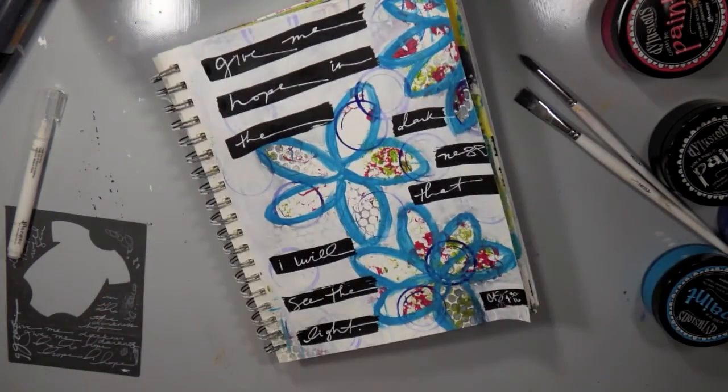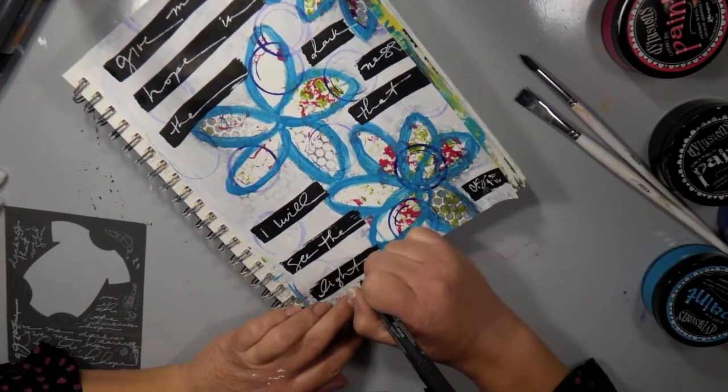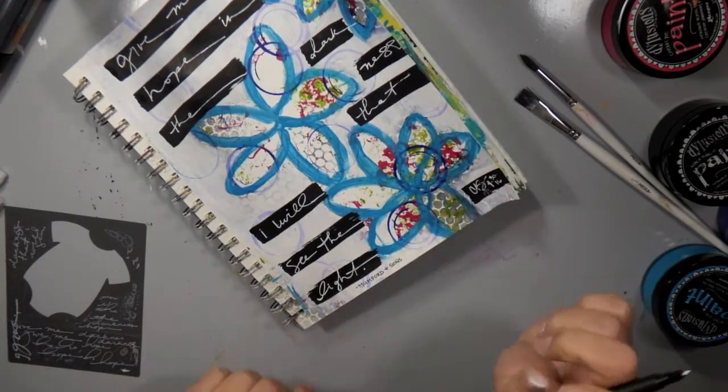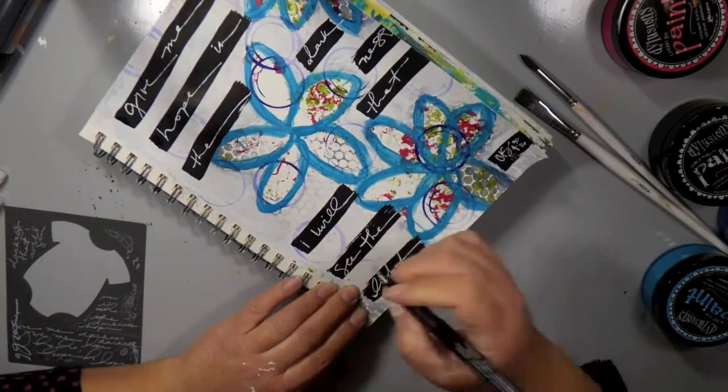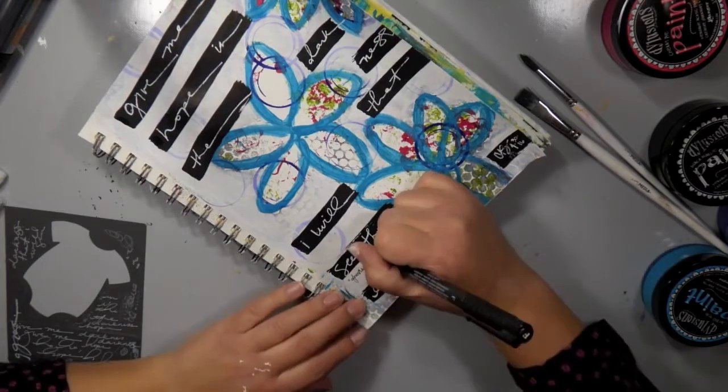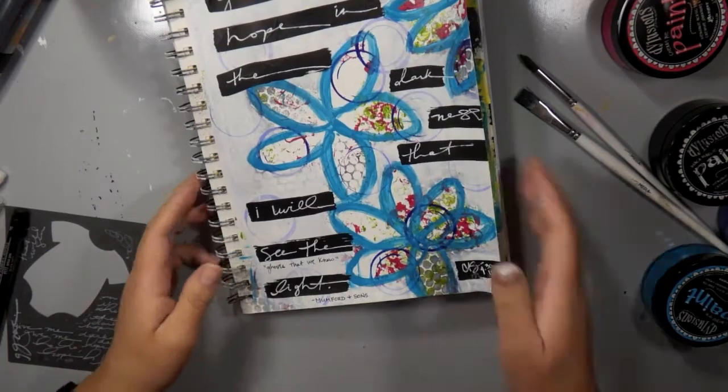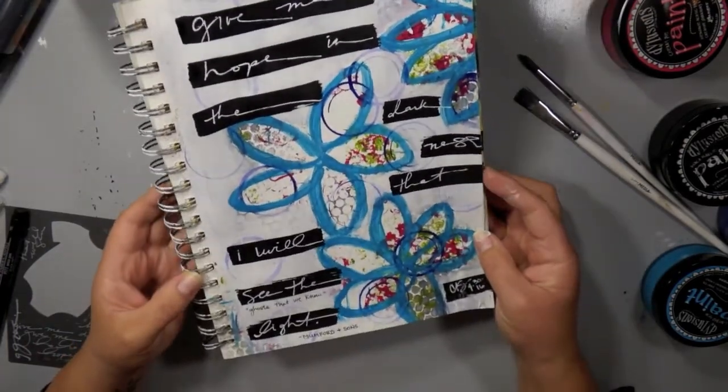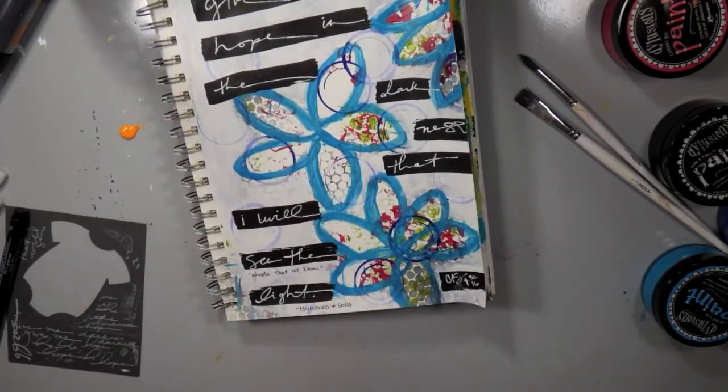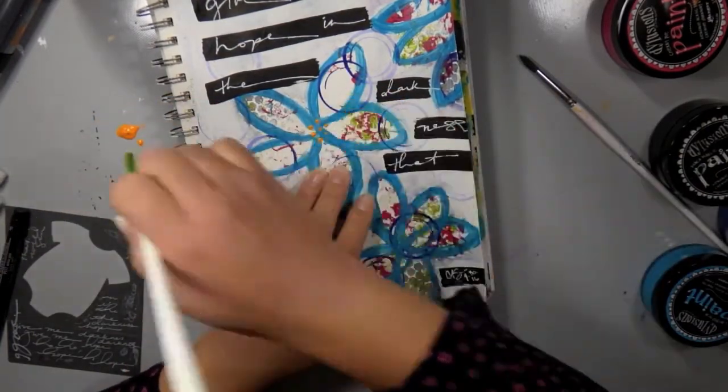Oh, I'm going to bring in some orange, I think it's the tangerine color from Dina Wakeley Heavy Body. And add some centers to my flowers after I note the lyrics that this journaling comes from Mumford & Sons with a Faber-Castell pen. So I'm looking at it, I'm like, it needs something. So now I'm bringing in the orange. I'm just going to use the back of my paintbrush and add some dots. That's going to be the center of my flowers and that really does complete this page.